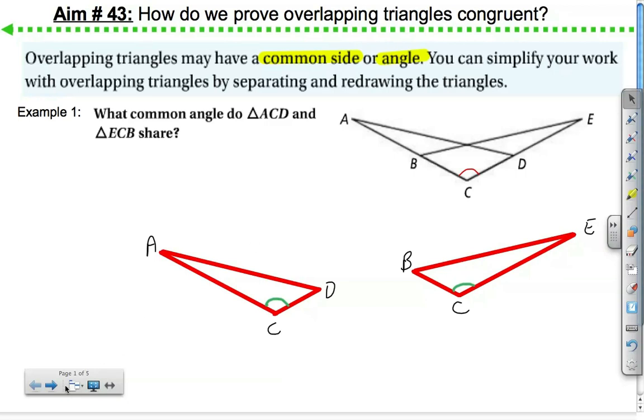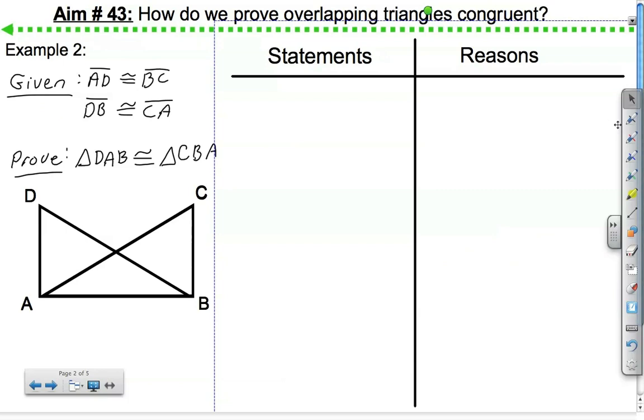Let's take a look at an example of proving these kind of triangles congruent. So our first example here, we have two triangles we need to prove congruent: triangle DAB and triangle CBA. So triangle DAB is right here, and triangle CBA is right here. As we can see, they're overlapping. We immediately see that they're sharing a side, AB. So first step, let's separate these triangles.